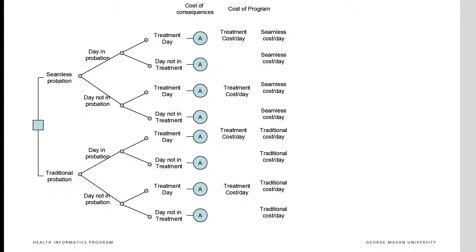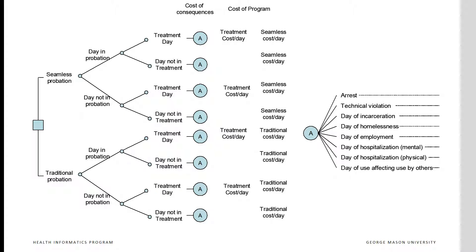For clients in different combinations of being in probation or treatment, there are several different costs. The two direct costs are the cost of a day of treatment and the cost of probation. There are also indirect costs such as cost of arrest, cost of technical violations, cost of a day of incarceration, cost of homelessness, cost of unemployment, cost of hospitalization, and cost of contributing to drug use of others. All these costs have to be enumerated and added to the study.